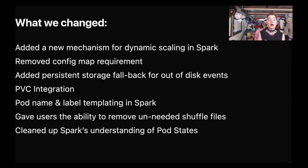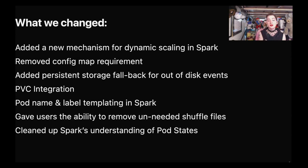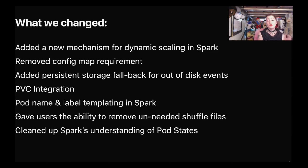In addition to best practices for your jobs, let's talk about what things we changed. We added a new mechanism for dynamic scaling in Spark — this is actually based on a design I came up with five years ago that just didn't make sense back then. We removed the config map requirement and essentially added an alternative because of our quota system. We also added persistent storage for fallback on out-of-disk events, though it turns out that because of how ephemeral disk quota works, we don't actually get the out-of-disk events in the same way. We also added some additional hooks, integrations into PVCs, and some templating.